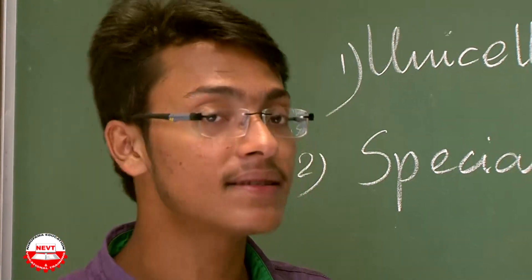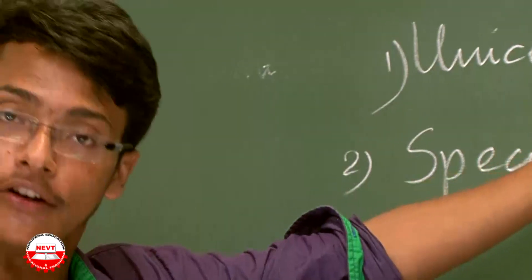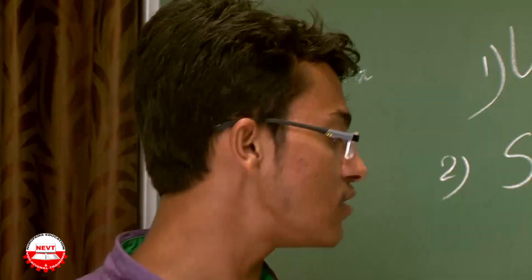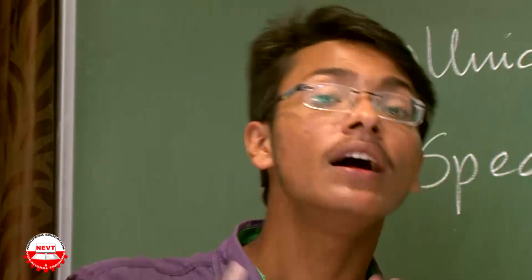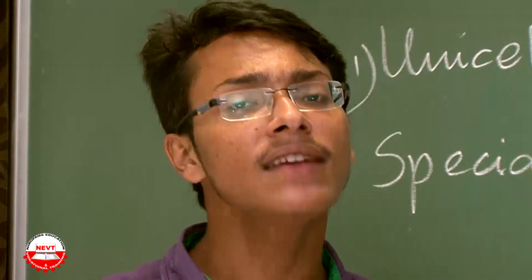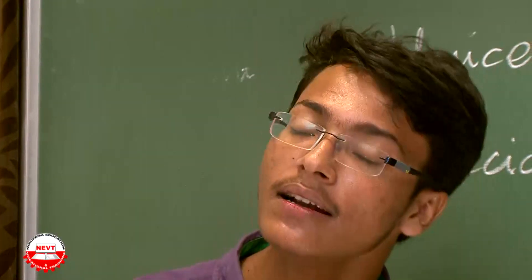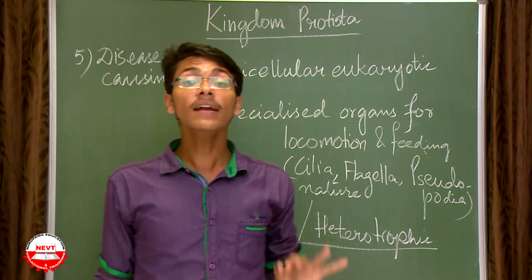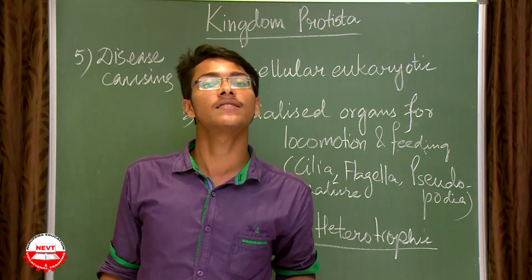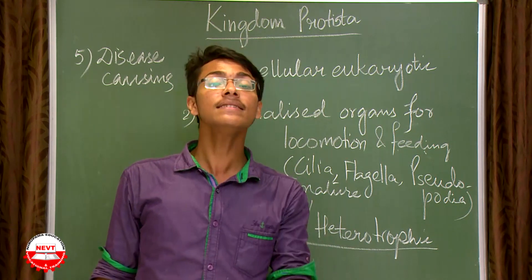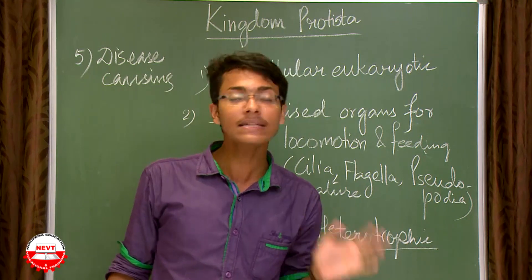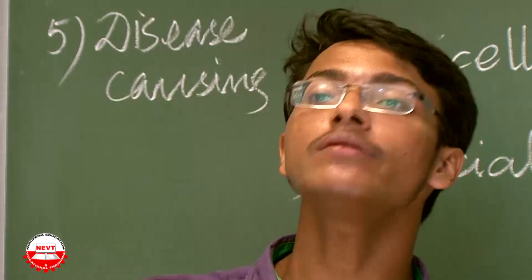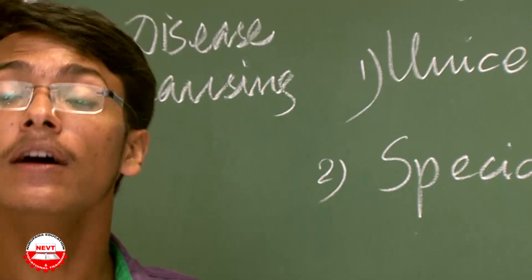To summarize the four important characteristics of Kingdom Protista: first, they are unicellular eukaryotes; second, they have specialized organs for locomotion and feeding; third, they are aquatic; fourth, they are autotrophic or heterotrophic. An extra point is that most protists are disease-causing in nature — for example, Plasmodium is a protist responsible for causing malaria in human beings, falling under the class Protozoans.